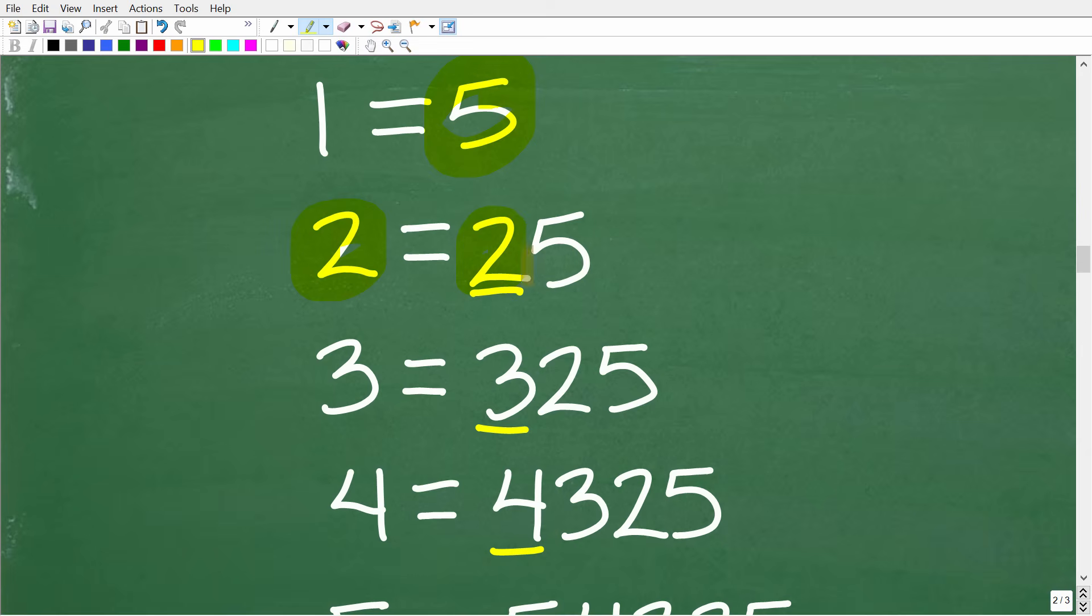But if that's the case, let's test it on this next set of numbers. 3 is equal to 325. So if we take this number and put it in front of the previous numbers, well, it seems to work, right? So 3 is equal to 325. So this pattern is holding true.